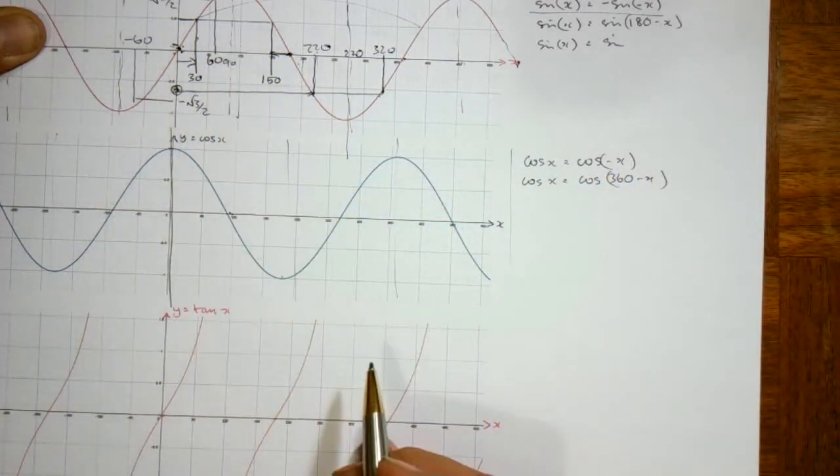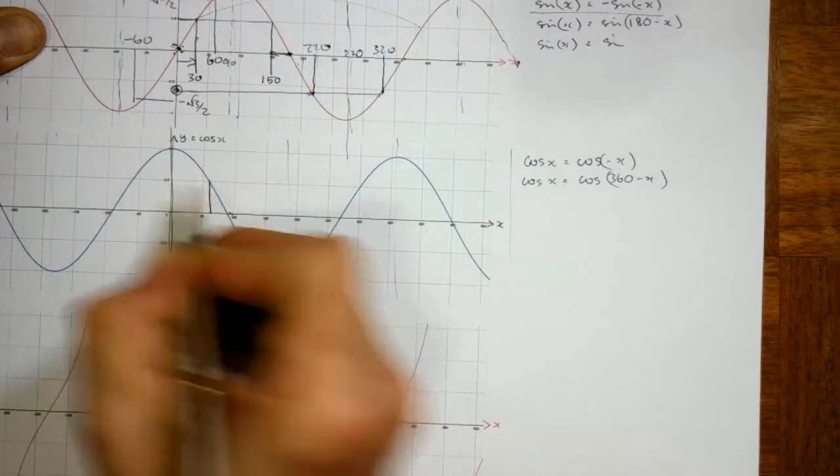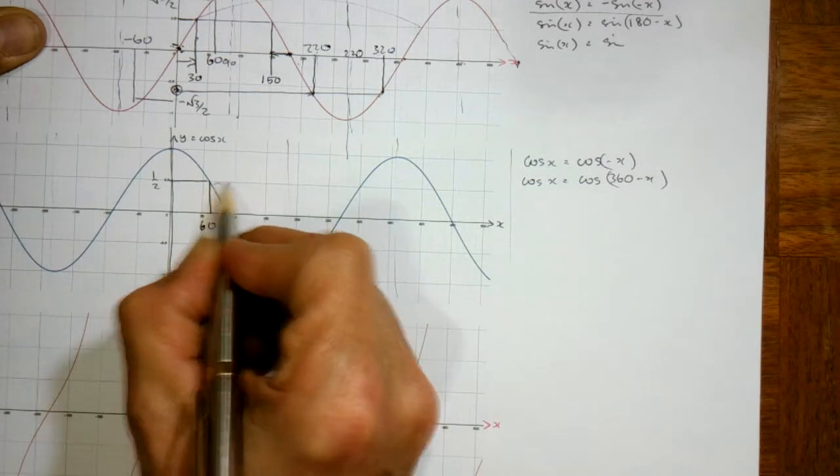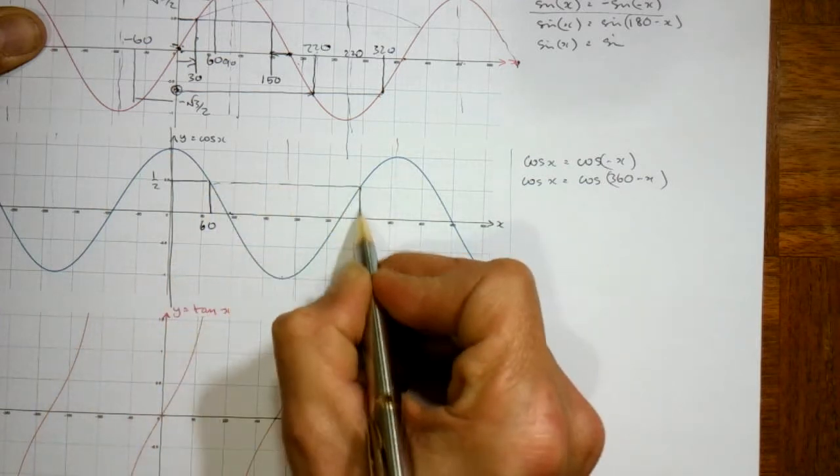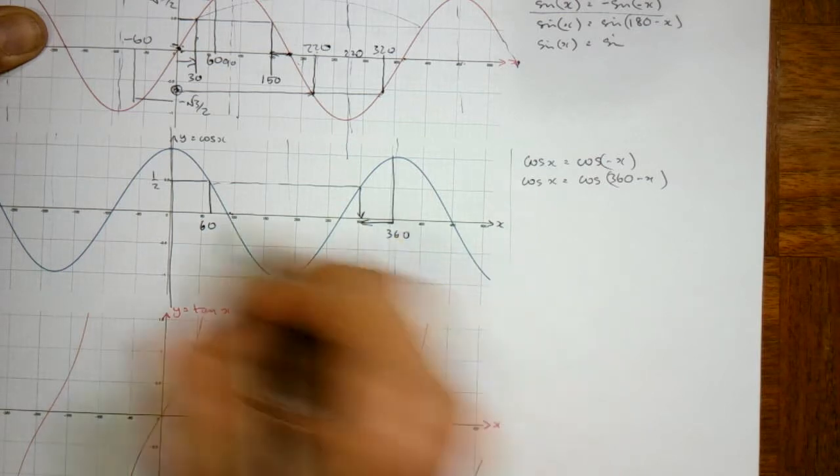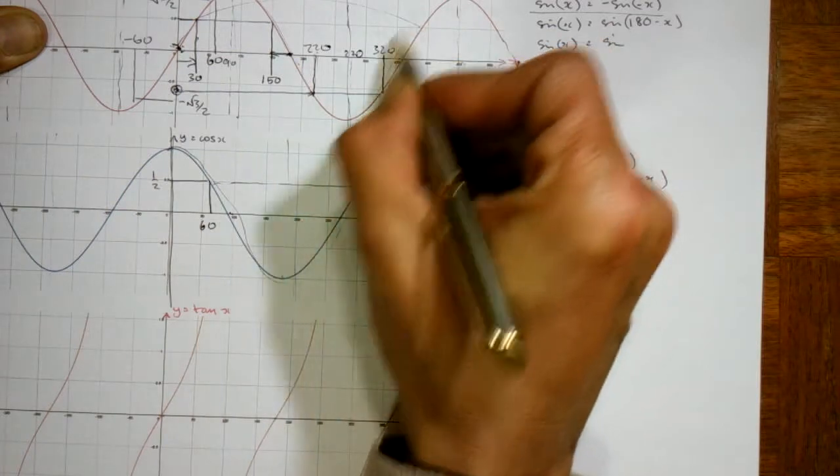So if we choose an angle of 60, and the y values are half for 60, then if we go across, this angle here will be 60 less than 360. The period of the cos graph is the same as the period of the sine graph. It comes back to where it started from every 360 degrees.